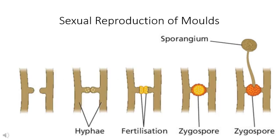Here you will be able to see the five stages of sexual reproduction of molds, starting from when the hyphae grow close to each other, up to where the sporangium is formed from the zygote spore and bursts to release its spores. This diagram may be a little bit easier to follow, as you can see all five steps in a row.